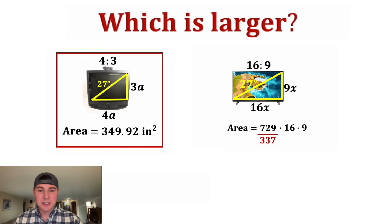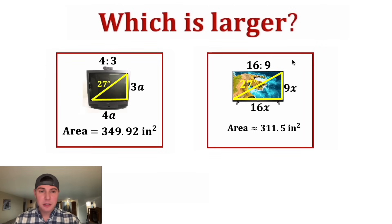And 729 times 16 times 9 is equal to 104,976. And 104,976 divided by 337 is approximately equal to 311.5. Let's give it a label of inches squared and put a box around it.